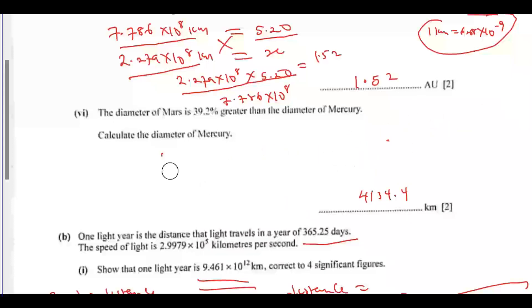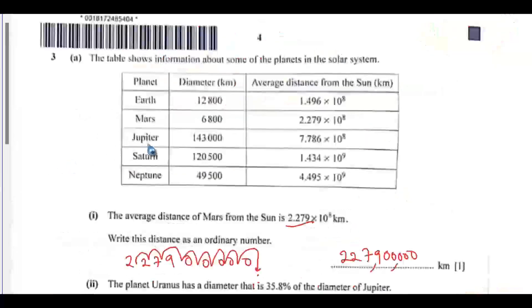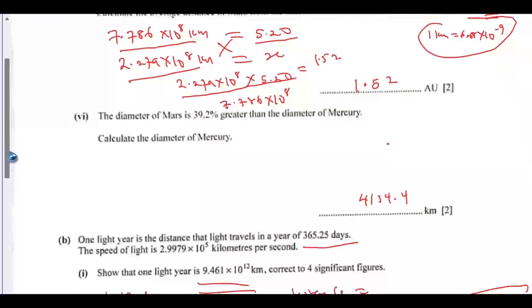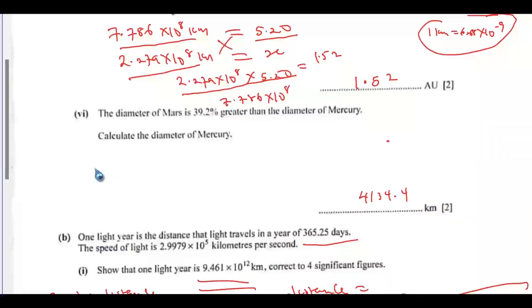We are told that we are being given the diameter of Mars to be 6,800. If you go to the table here, this is the diameter of Mars is 6,800. From there, we can easily say that the diameter of mercury is 6,800. Let's start with mercury at 100%. The diameter of mercury is unknown, so we will let it be x.